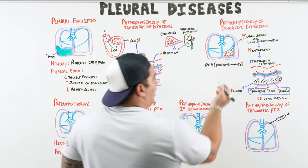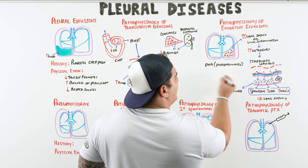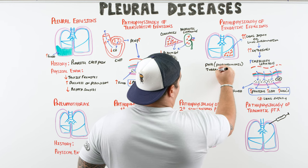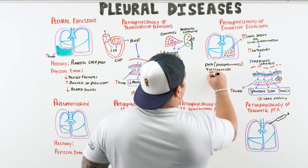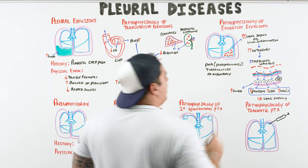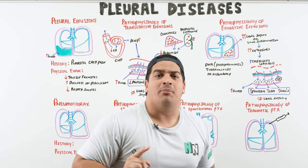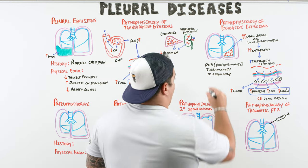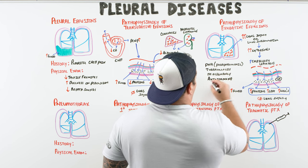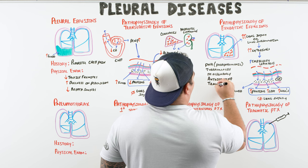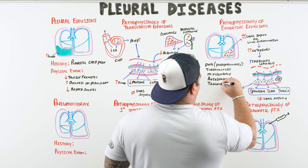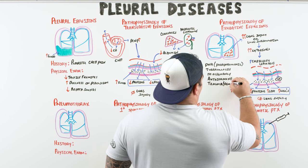Other causes of exudative effusions include tuberculosis, malignancy such as lung cancer, autoimmune diseases, and trauma — which can cause a hemothorax.